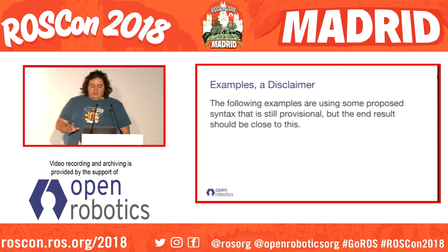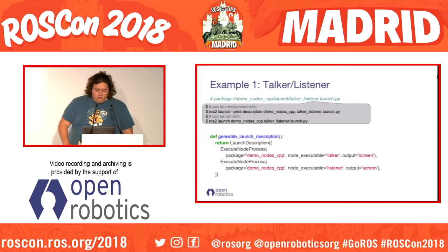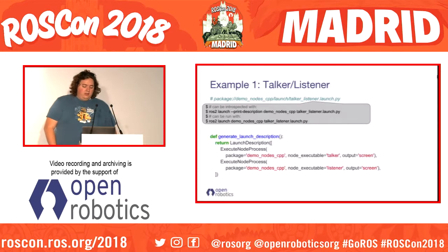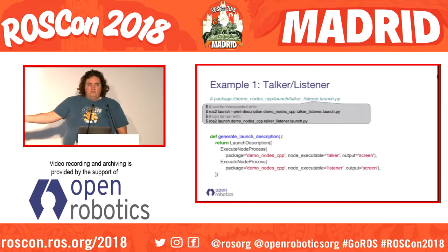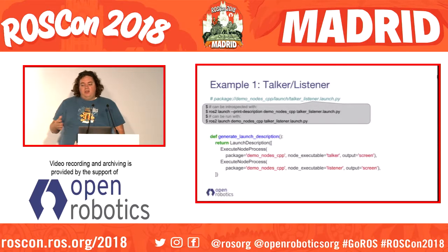I'm going to jump directly into some examples, but a disclaimer: these examples are using the latest and greatest syntax, which may not be available in Bouncy or even on master yet, but we're working on it. I thought it was better to show what's going to be as opposed to what is. This is the simplest example I could come up with — it simply runs a talker and a listener. It's a Python interface. There's a convention that if you have a file ending in .launch.py and a function called generate_launch_description, you can just do 'ros2 launch package_name file_name'. You can also introspect it by doing --print-description.